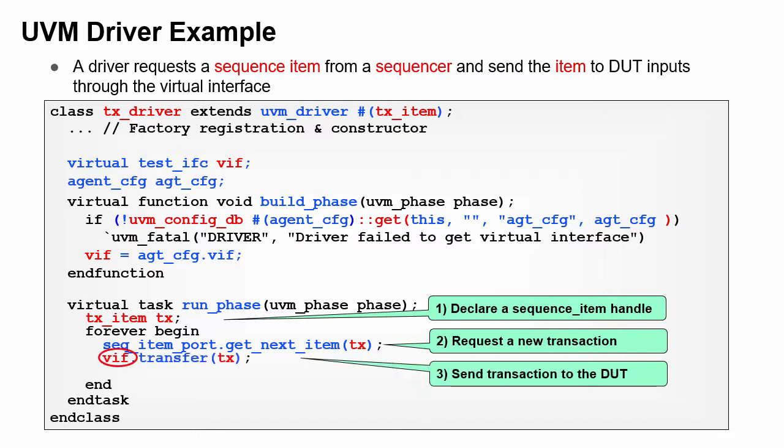Third, the driver calls a method in the interface, such as Transfer, to send the transaction to the DUT. When that task returns, the driver tells the sequence it's done with the transaction by calling Item Done. Optionally, it can send a response, not shown here.